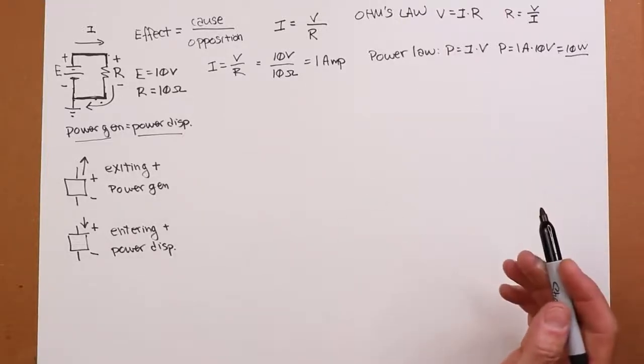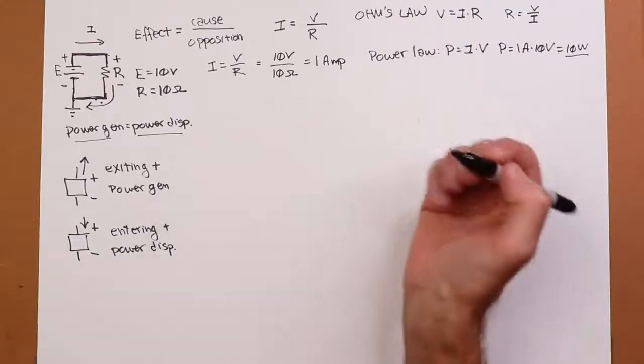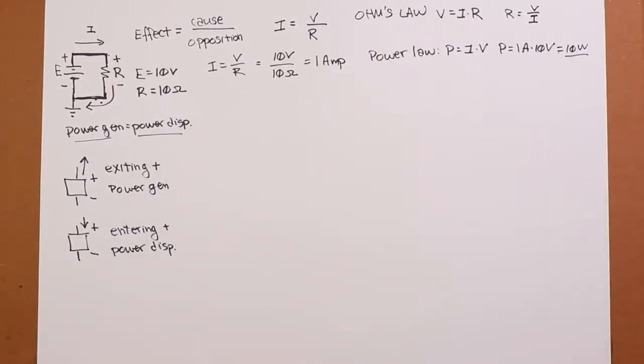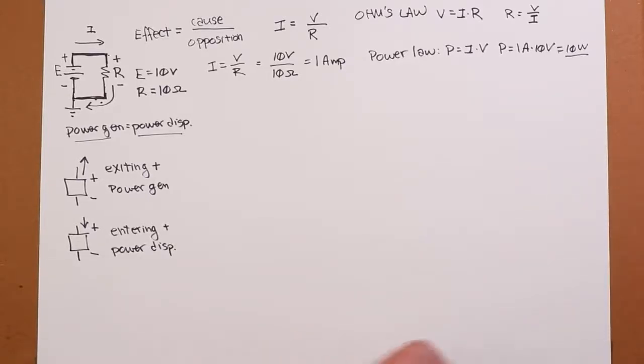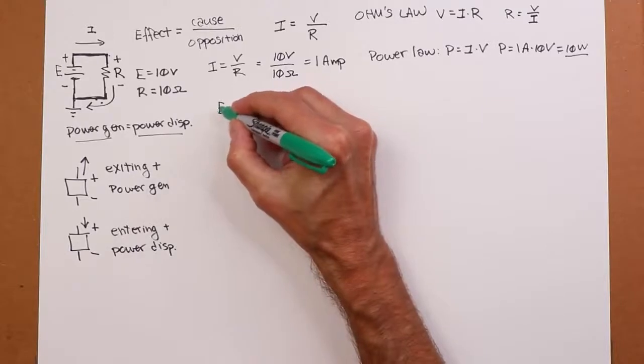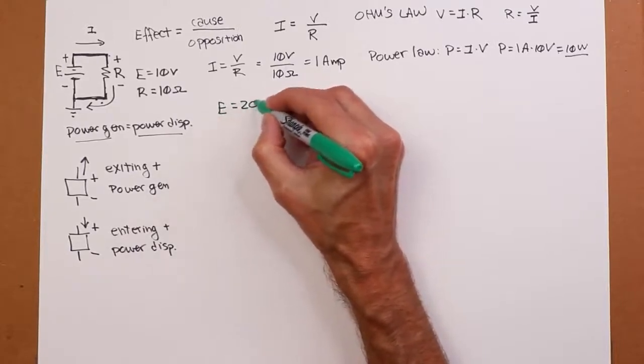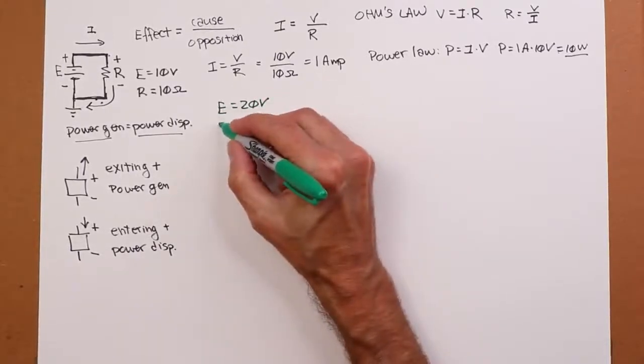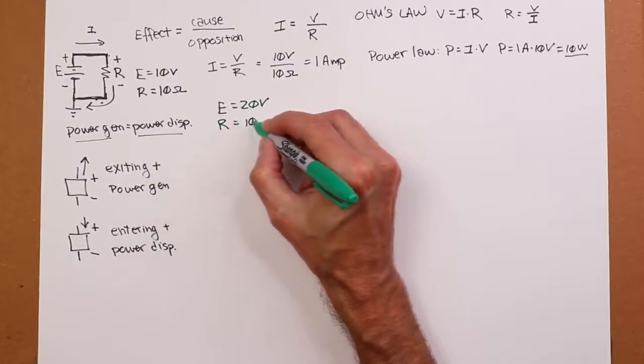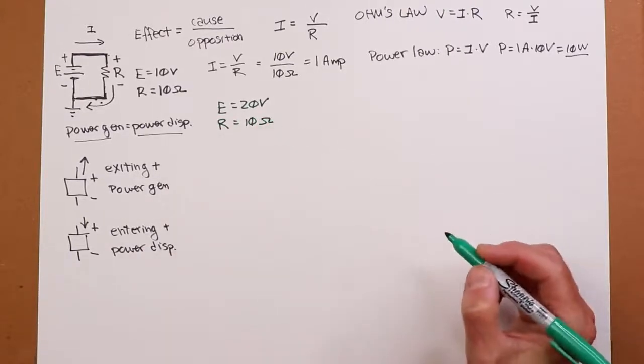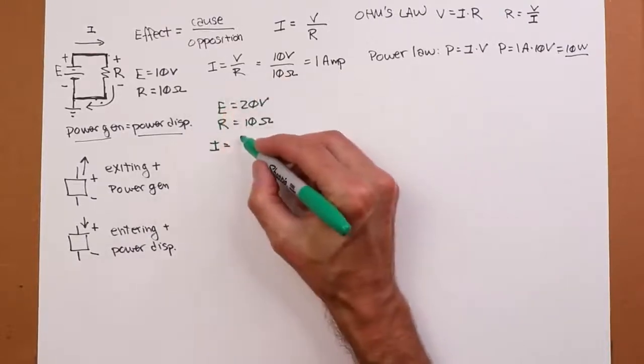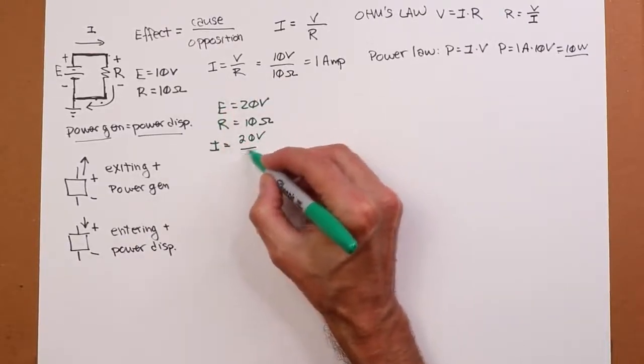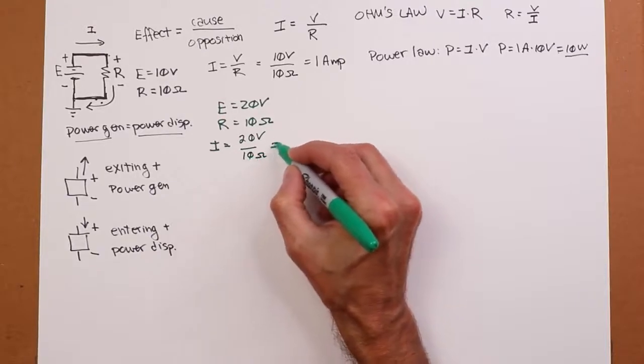All right, let's change up some of the numbers a little bit. So suppose we bump the voltage up to 20 volts. Leave the resistor at 10 ohms. So what do we get? Well, the resulting current on here, same equation, now it's 20 volts divided by 10 ohms. That's 2 amps.